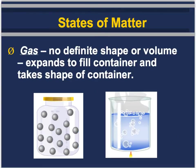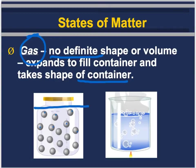The last state of matter you're probably familiar with is gas. It has no definite shape — it expands to fill the container and takes its shape. Notice how the particles are spread apart; they're not compact with each other and they go all the way to the top of the container. In the image here, we have a mixture of liquid, and the bubbles you see are represented as gas.